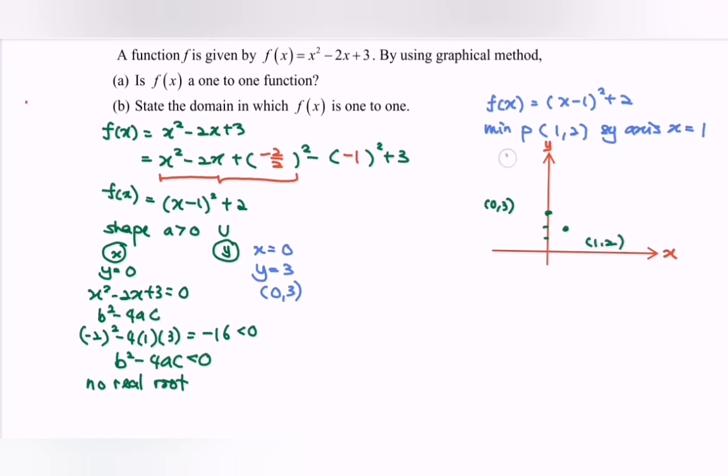So let me sketch the graph. Here we have the graph for the function f(x) = x² - 2x + 3. Then we have the symmetrical axis x = 1.